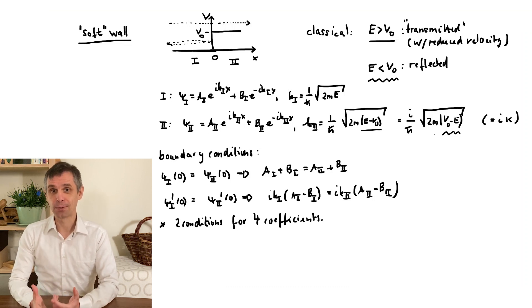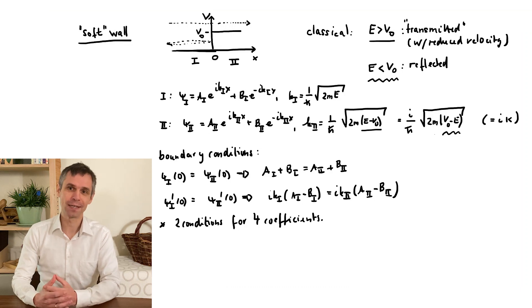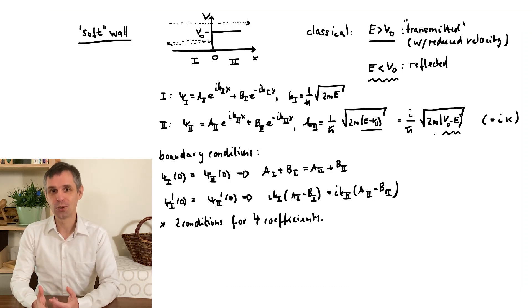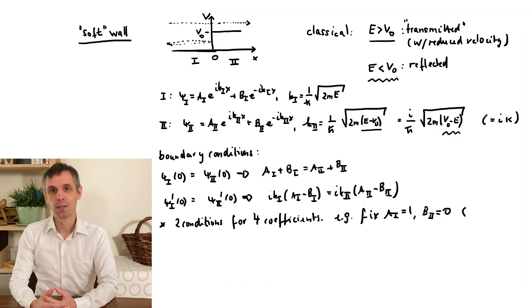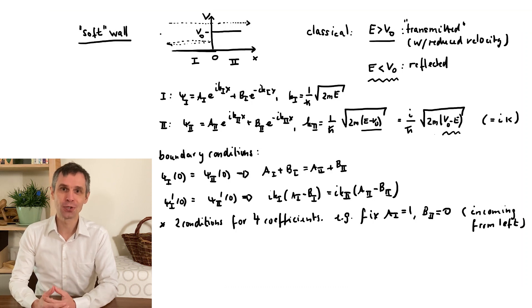Indeed, note that the particle can now escape to infinity into both directions. But physically, the scenario that we had in mind was a source of particles somewhere at the very left. So, let us assume that there are indeed no particles arriving from the right. These correspond to the coefficient b2, which we therefore set to zero. We are also free to set a1 to 1. After all, all our solutions are only determined up to an overall constant. And we just need to be careful to later normalize our probabilities.